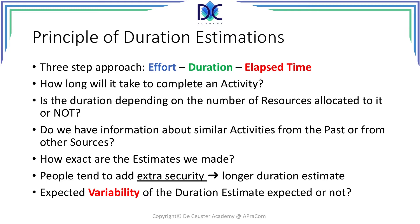We want to have a clear estimate — this task will take 25 hours and that's it. Unfortunately, there is some variability that is normal for all actions we undertake and all measurements we take. Variability is just a part of our everyday life, so we have to take it into account in a way that is logical and understandable by all the stakeholders.